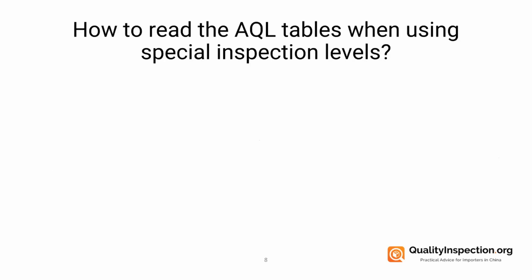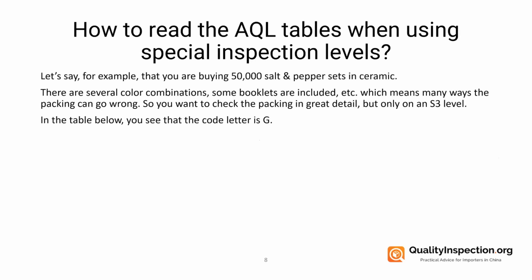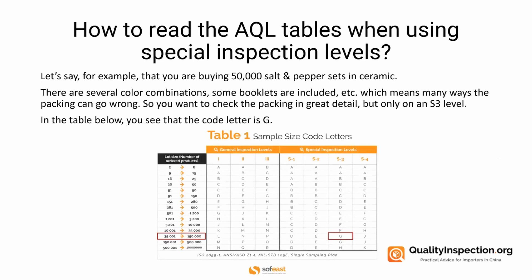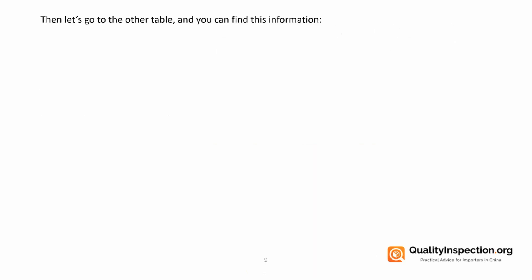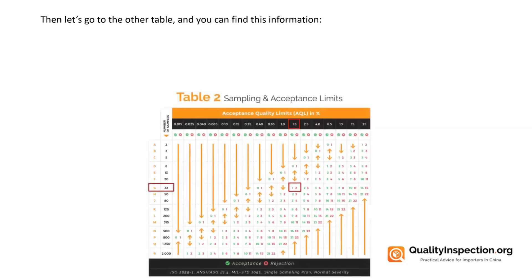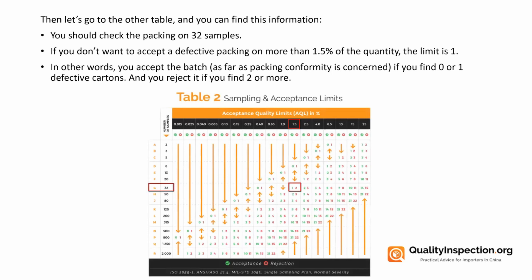So how do we read the AQL tables when we've decided to use special inspection levels? Let's use the example of buying 50,000 salt and pepper sets in ceramic. Some have different colors, you're including booklets, etc., so there are many ways that the packing can go wrong. You want to check the packing in great detail but only on an S3 level. Looking at the table, the code letter for S3 and your lot size is G. Taking that letter into the other table, you can see that you should check the packing on 32 samples. If you don't want to accept defective packing on more than one and a half percent of the quantity, the limit is one — so you accept the batch if you find zero or one defective carton, but you reject it if you find two or more.